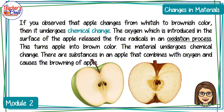If you observed that an apple changes from whitish to brownish color, then it undergoes chemical change. The oxygen introduced on the surface of the apple releases free radicals in an oxidation process, which turns the apple brown. There are substances in an apple that combine with oxygen and cause the browning.